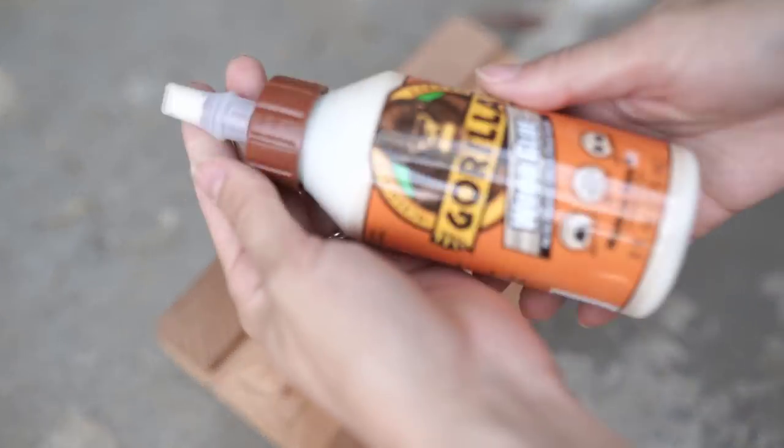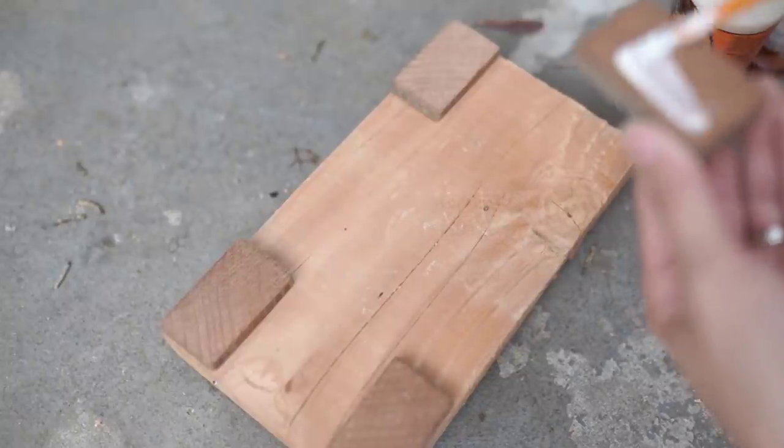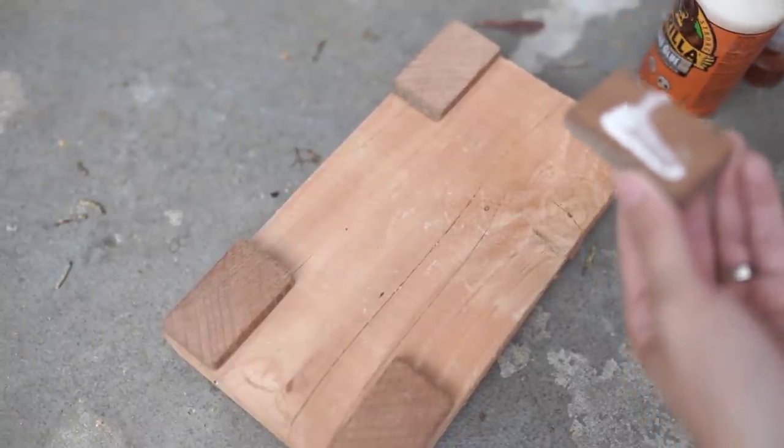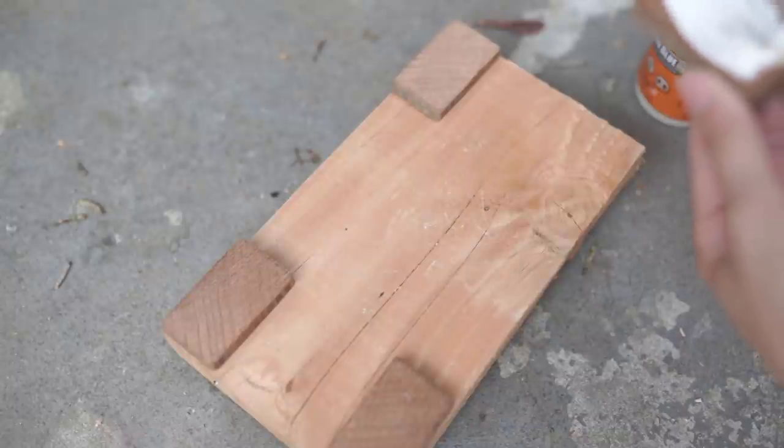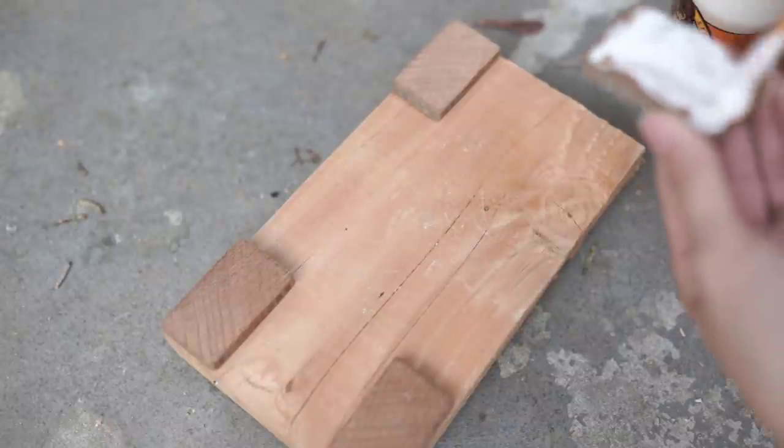My wood glue was kind of dried up in the nozzle so I ended up just taking the cap off and spreading it on like paste. That always happens to me and I don't know how to prevent that. If anybody knows, leave me a comment below.